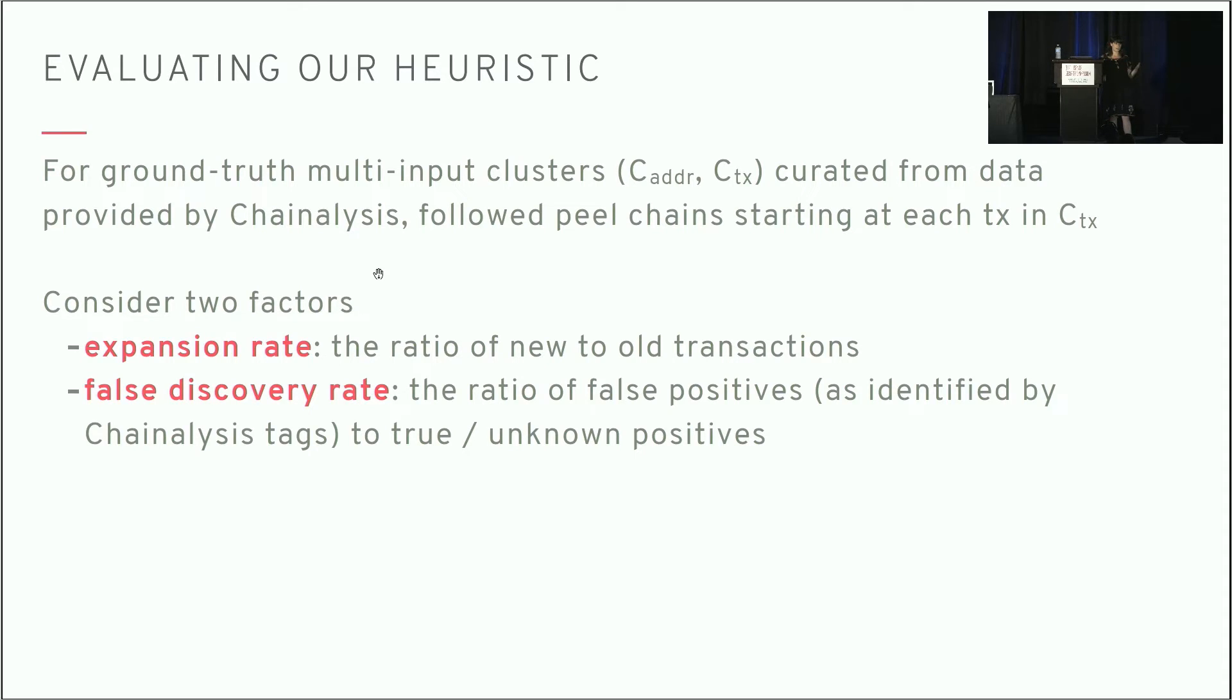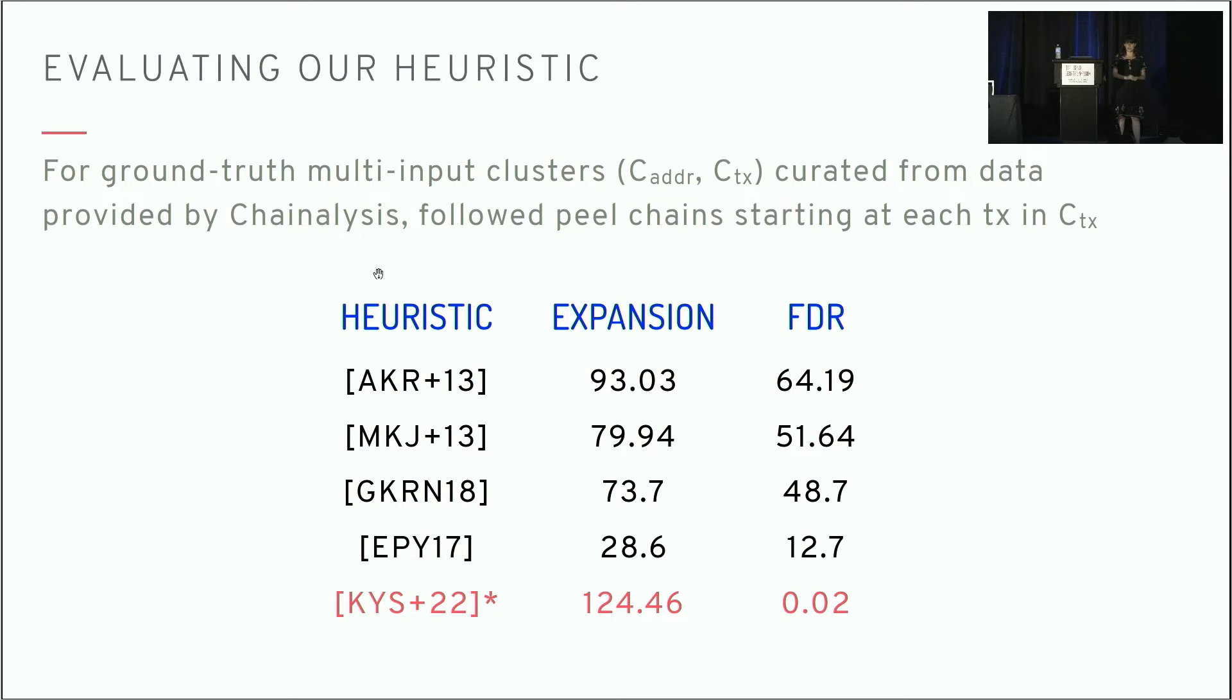In addition to evaluating our own heuristic, we wanted to also evaluate the existing heuristics present in the literature. There's the original ones from 2013, and then several refined versions from more recently. We can see that for a lot of these old heuristics, the false discovery rate is incredibly high. This one-time use behavior, while it may have been an indication of a change address in Bitcoin as it existed eight to ten years ago, seems to be really problematic today. It seems very possible to create false positives with this heuristic. The exception is this last one due to Ermilov et al., but there we can see that while they have a lower false discovery rate, it has really hampered their effectiveness. The expansion factor is significantly lower.